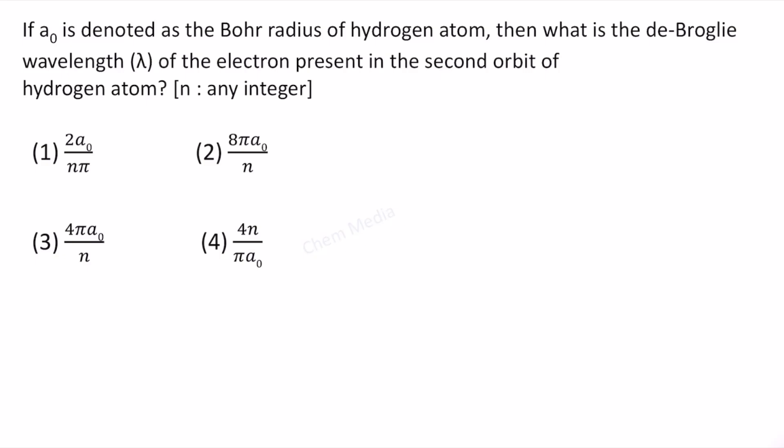Hello everyone, here is a question from quantum mechanical model of atom. If a₀ is denoted as the Bohr radius of hydrogen atom, then what is the de Broglie wavelength λ of the electron present in the second orbit of hydrogen atom?